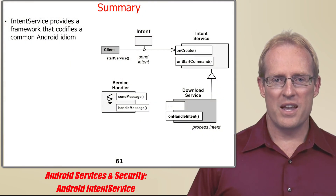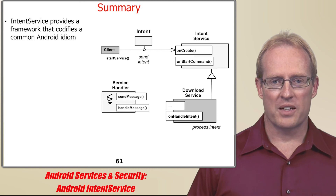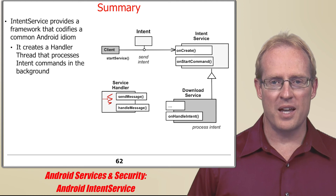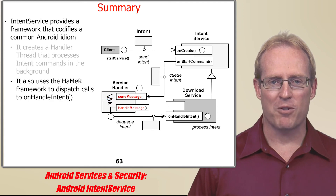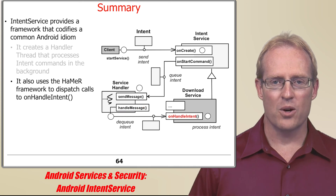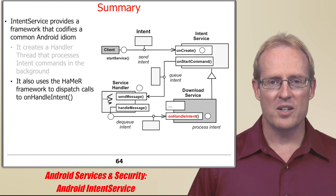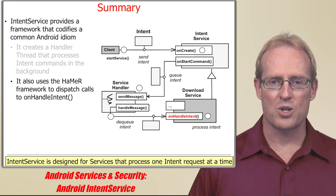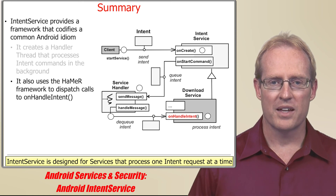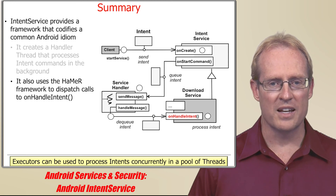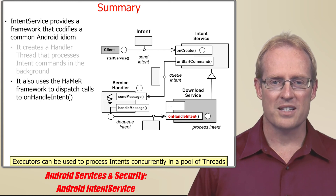In summary, the Android intent service provides a framework that codifies a common Android idiom. It creates a handler thread that processes intent commands in the background. Likewise, it uses the handler framework to dispatch calls to the onHandleIntent hook method, which performs application-defined processing of the intent parameter. The intent service is designed for started services that only need to process a single intent request at a time in a background thread. If additional concurrency is needed, then other solutions are available, as we'll discuss later.